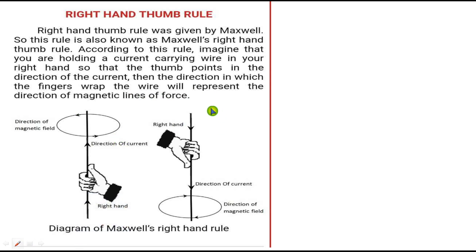You are holding a current carrying conductor in your right hand. This thumb represents the direction of current, and coming to the curved fingers, the fingers which are wrapping this conductor represent the direction of magnetic field.